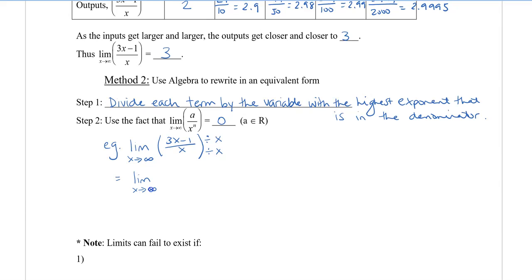We have the limit as x approaches infinity. If I divide everything by x, I get 3 minus 1 over x, and in the denominator, I get 1. Using my limit laws, I have the limit as x approaches infinity of 3 minus the limit of 1 over x as x also approaches infinity. The first term, the limit is always going to be 3. In the second term, as x gets bigger and bigger, we say that this approaches 0. So we have 3 minus 0, which equals 3.